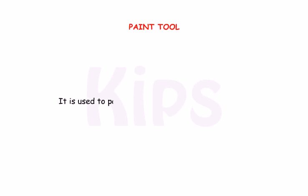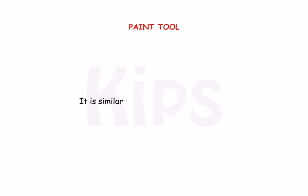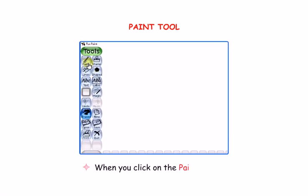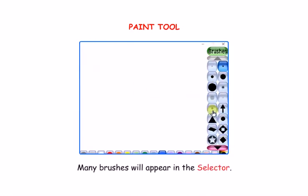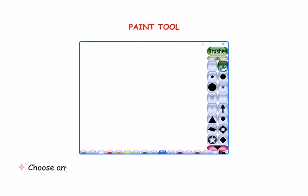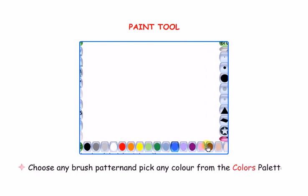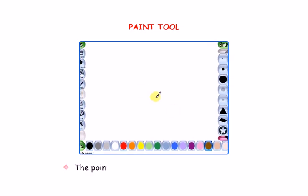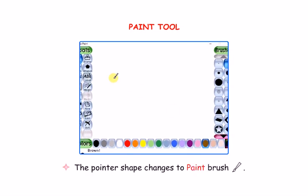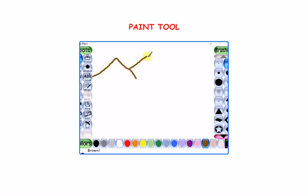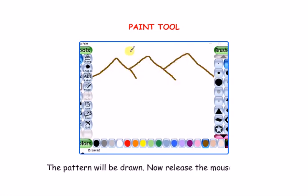Let us now talk about the Paint Tool. It is used to paint and draw anything that you like. It is similar to a brush tool in MS Paint. When you click on the Paint Tool, many brushes will appear in the selector. Choose any brush pattern and pick any color from the colors palette. The pointer shape changes to Paint Brush. Press the left mouse button and drag. The pattern will be drawn. Now release the mouse button.